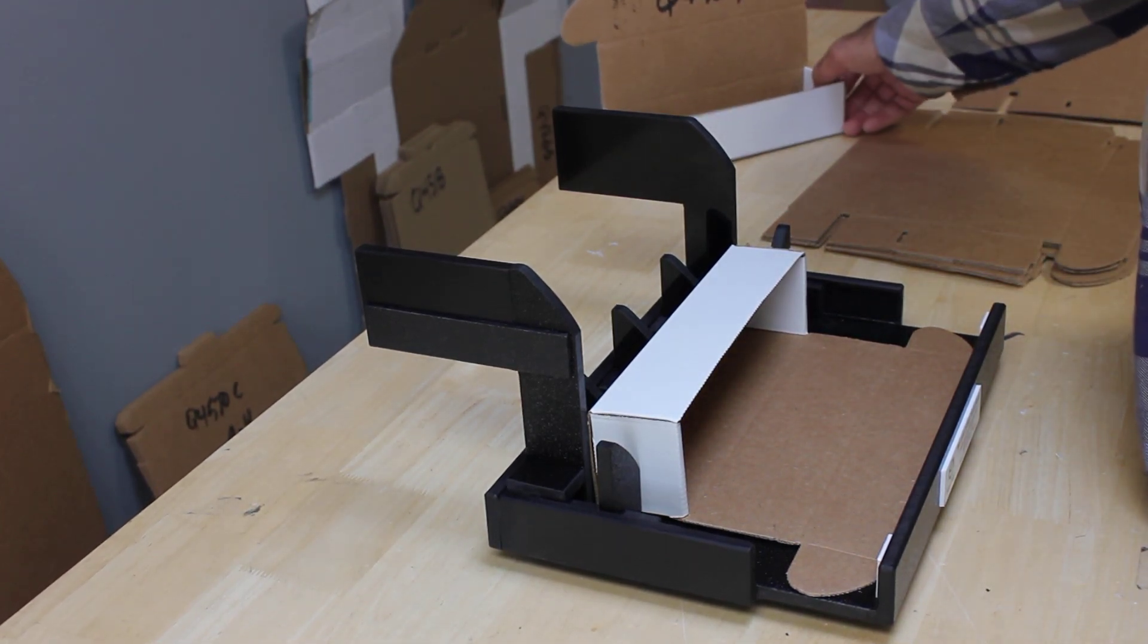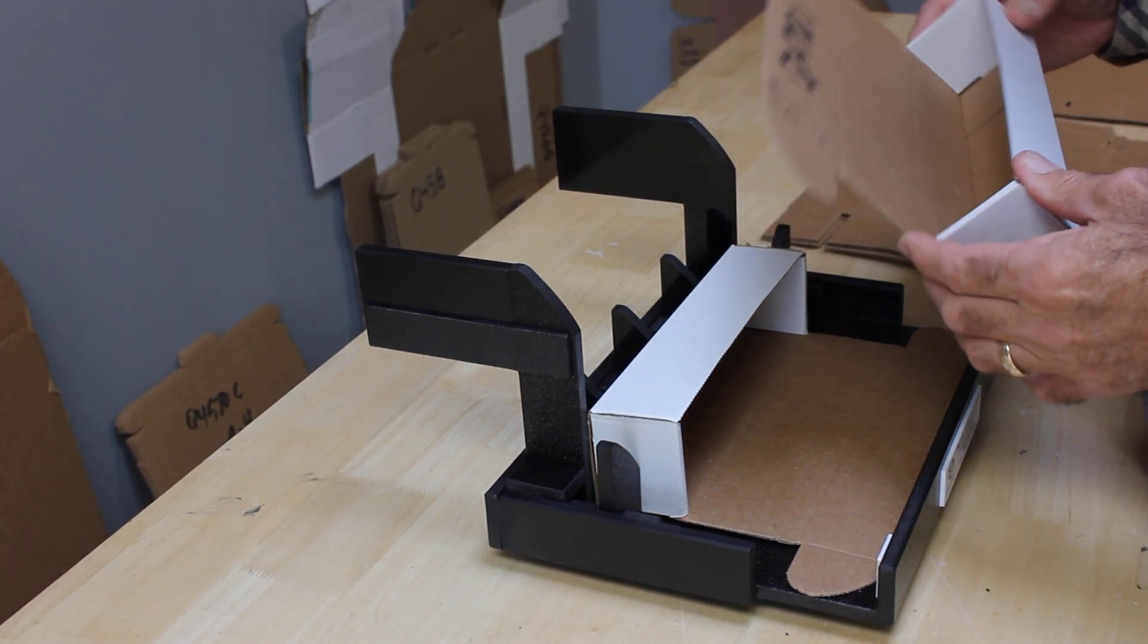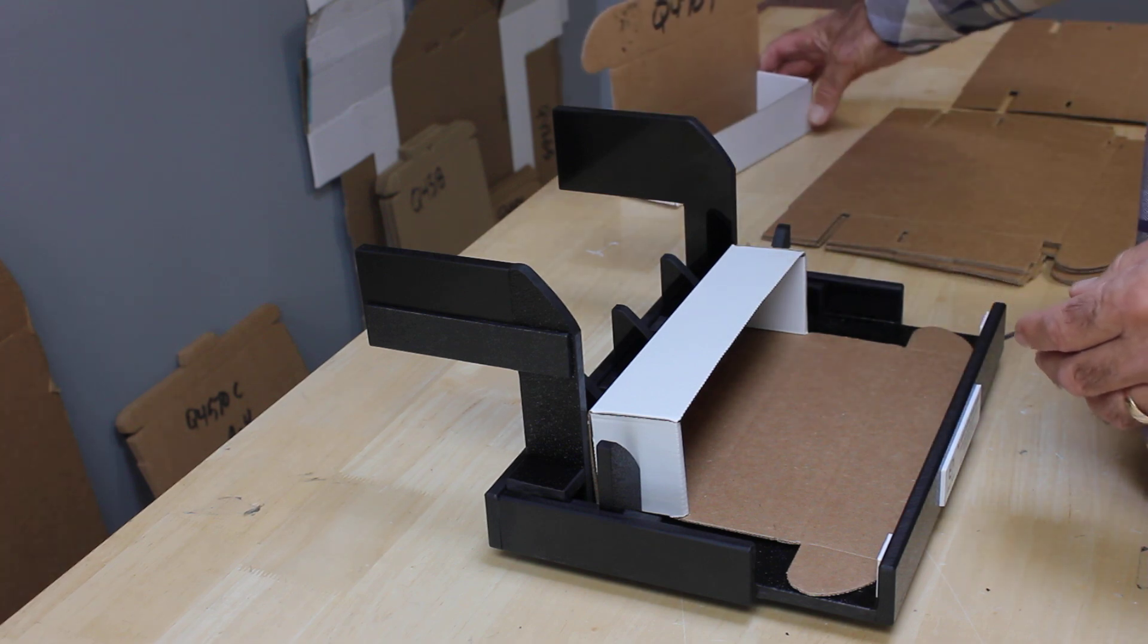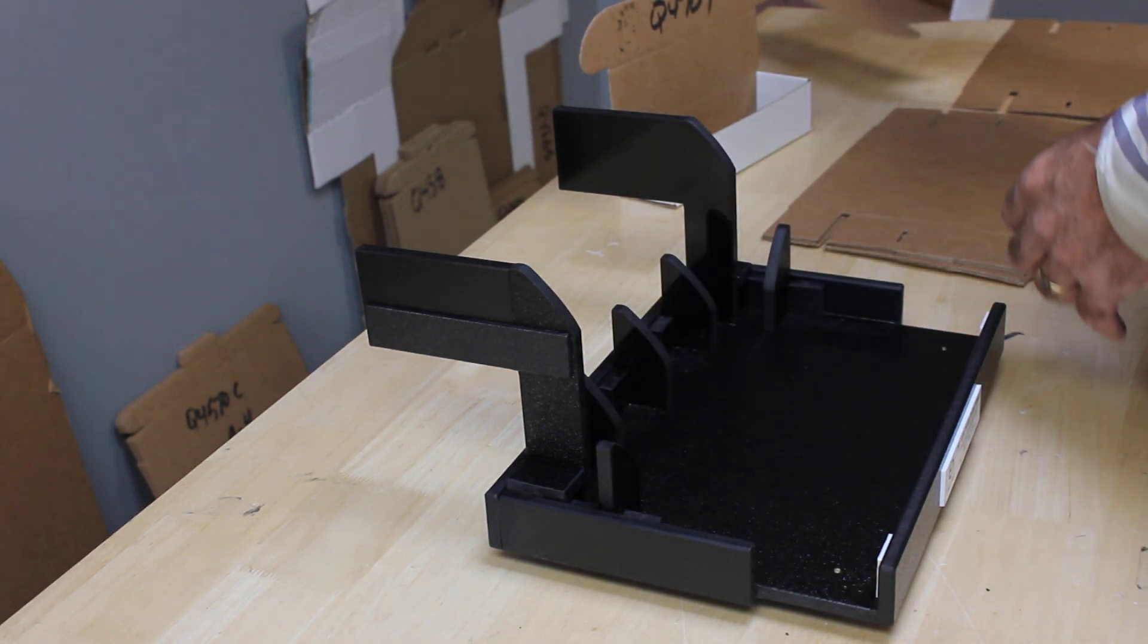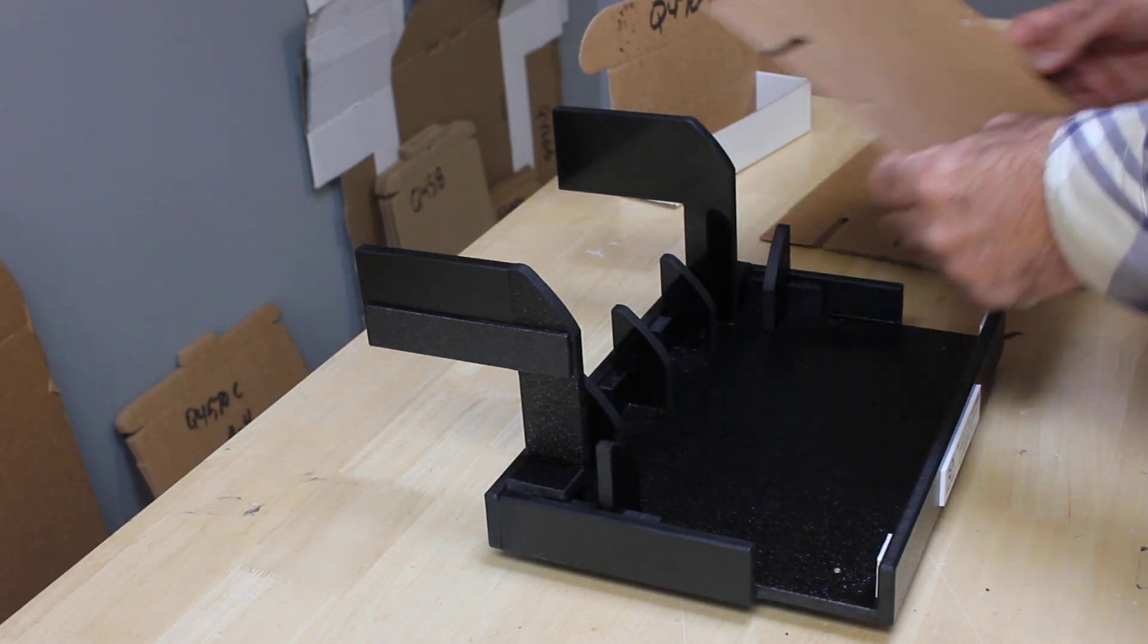Well hello there, we've got a small indestructo style box to go ahead and demonstrate for you today. So let's go ahead and get started and show you how it's done. Now we have labels that's going to indicate the front. Put that label directly in front of you and you're just going to go ahead and take your box.